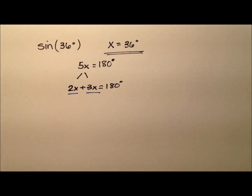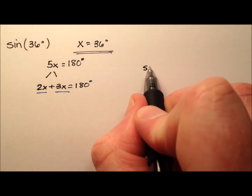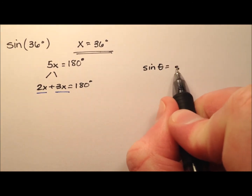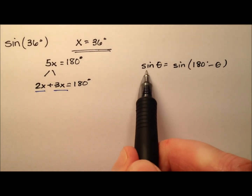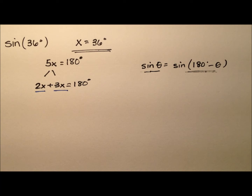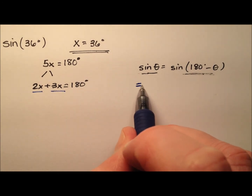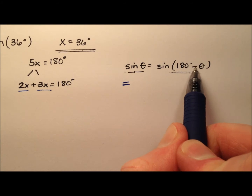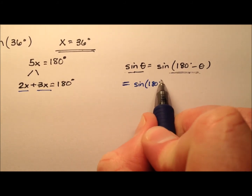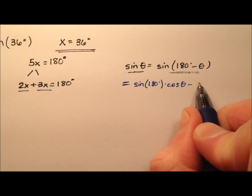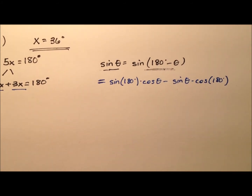I have a special relationship with the sine of supplementary angles. If you have the sine of theta, that's going to be the same as the sine of 180 degrees minus theta. I'll work that out because I don't want to just state something like that without showing you it works. We're going to use the difference formula for sine and expand this as: sine of 180 degrees times cosine of theta, minus cosine of 180 degrees times sine of theta.